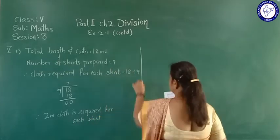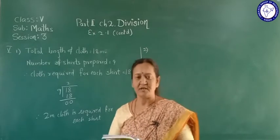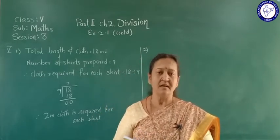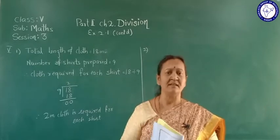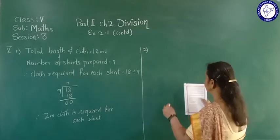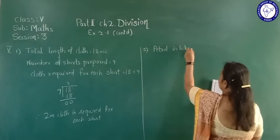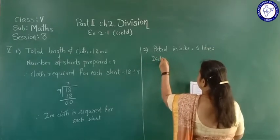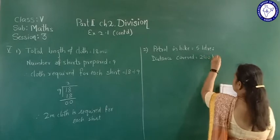Second one — a bike can cover 240 kilometers with 5 liters of petrol. Find how many kilometers does it cover with 1 liter of petrol. In a bike, if 5 liters of petrol is there, it can go 240 kilometers. If we have 1 liter of petrol, how much distance it can cover, that we should find. Petrol in bike is 5 liters. Distance covered is 240 kilometers.